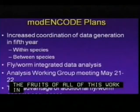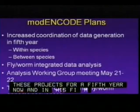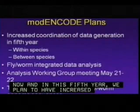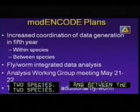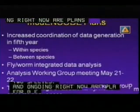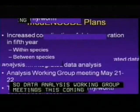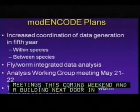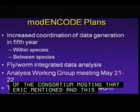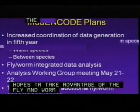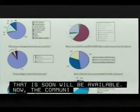We've extended this project into its fifth year. In this fifth year we plan to have increased coordination of data generation, both within species and between the two species. Ongoing right now are plans for fly and worm integrated data analysis, with a data analysis working group meeting this coming weekend in advance of the consortia meeting. This group hopes to take advantage of additional fly and worm genome sequences that are now available or soon will be.